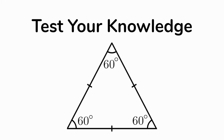How would you classify this triangle? It's also acute — all of those angles are 60 degrees, so they're all less than 90. And it's equilateral — all the sides are equal. So: equilateral acute.